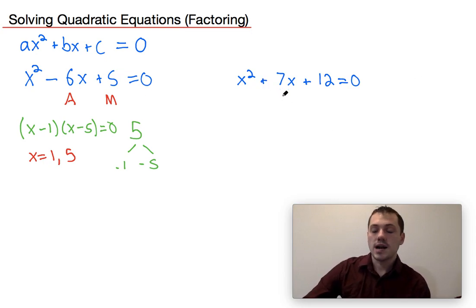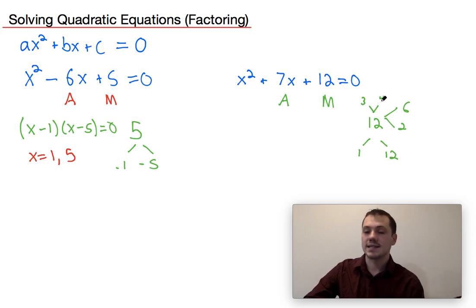Another example over here, it needs to add to seven and multiply to 12. So if I take the factors of 12, those would be one and 12. Those don't add to seven. Two and six, those also do not add to seven, or three and four. Now positive three and positive four do add to seven.